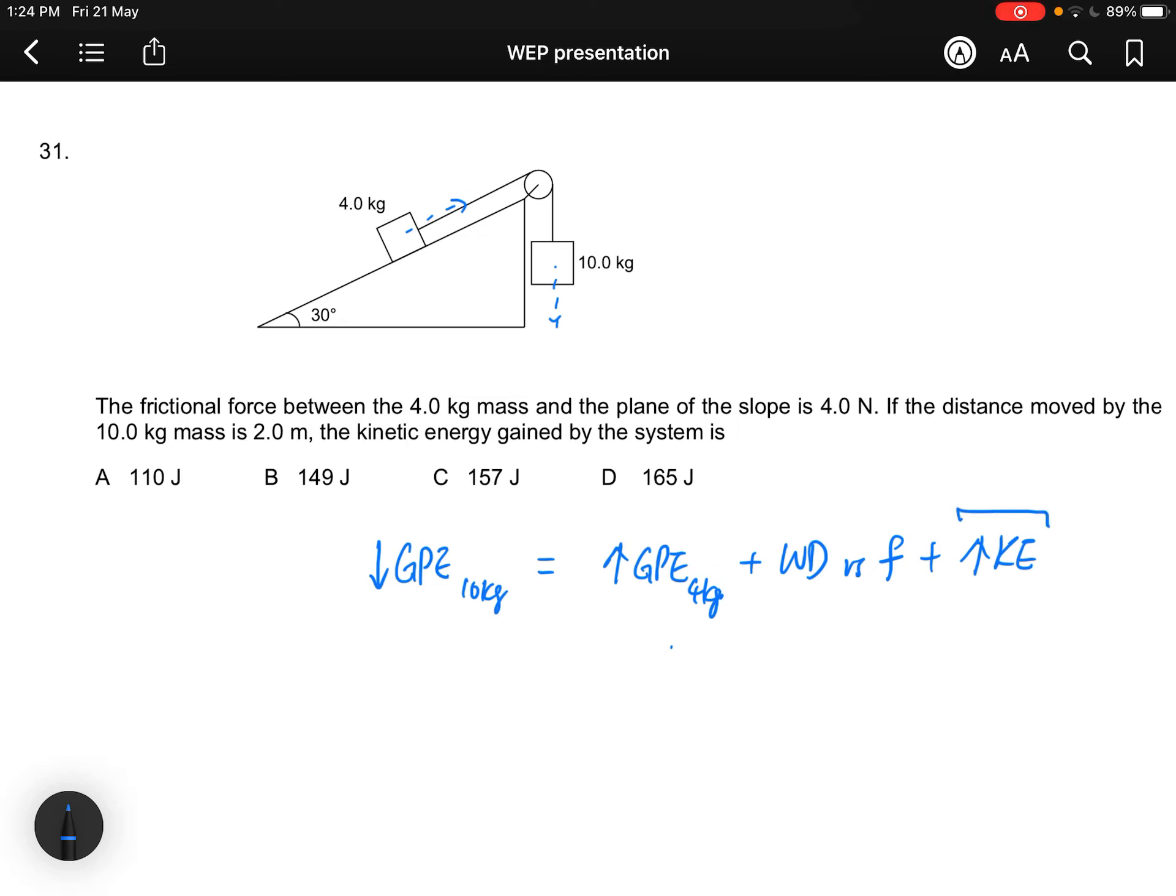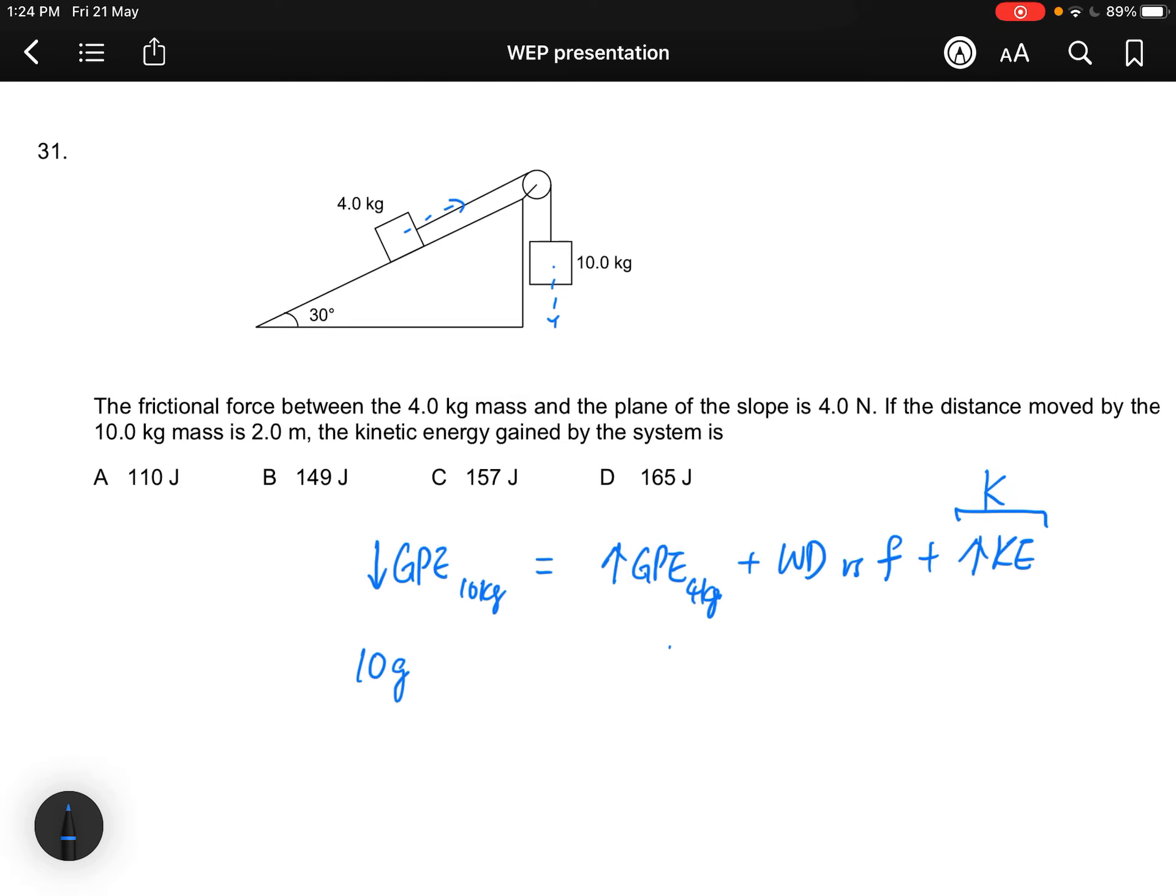This entire term line, let's call this K. So loss in GPE is equals to 10g times the distance moved, which is 2 meters. So it's 10g(2). Gain in GPE of 4 kg...